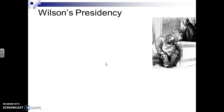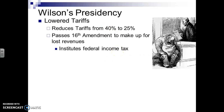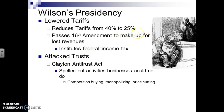When we look at Wilson today, we look at his policies. First, he lowers tariffs, which Taft had failed to do, reducing them from 40% to 25%. He passes the 16th Amendment — the first amendment that institutes a federal income tax on the wealthy, so that a percentage of wealthy individuals' income gets taxed and sent to the federal government to create programs for those who can't help themselves, like the poor. He also begins to attack trusts, spelling out activities that businesses could not do with the Antitrust Act, especially the Clayton Antitrust Act — including competition buying, monopolizing, and price cutting.